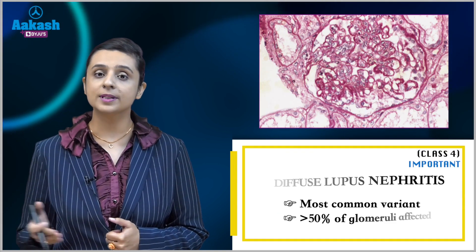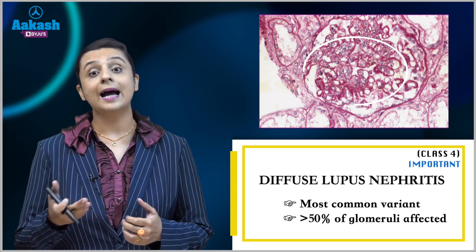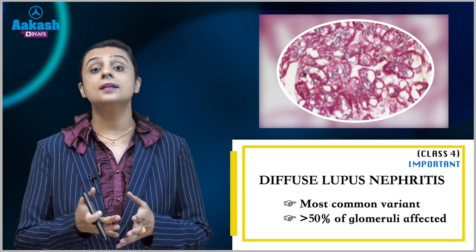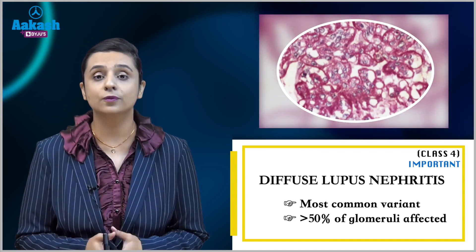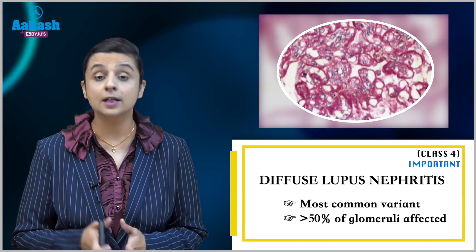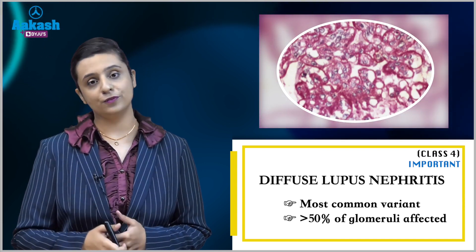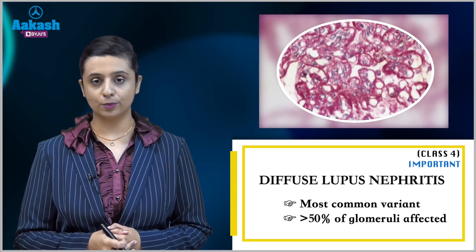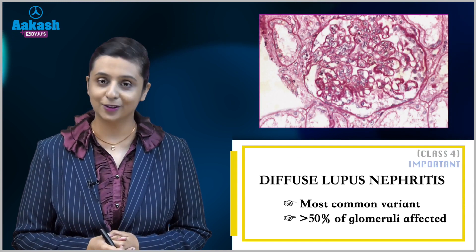Class 4 is diffuse lupus nephritis. As the name suggests, there is diffuse involvement, meaning more than 50% of the glomeruli will be involved.